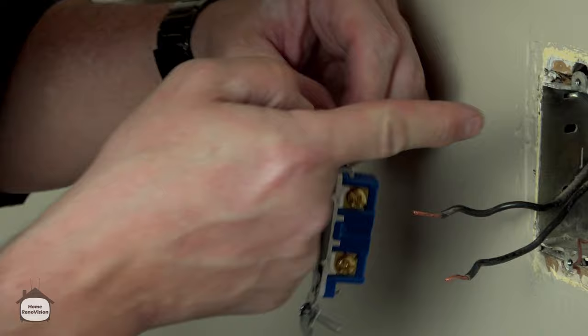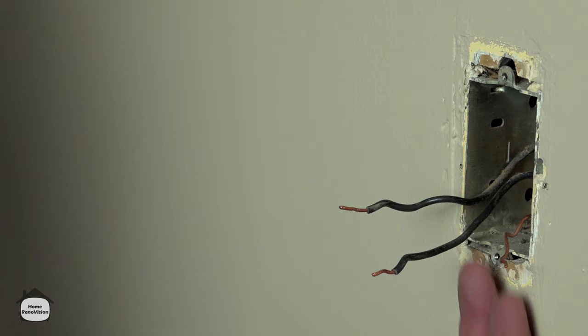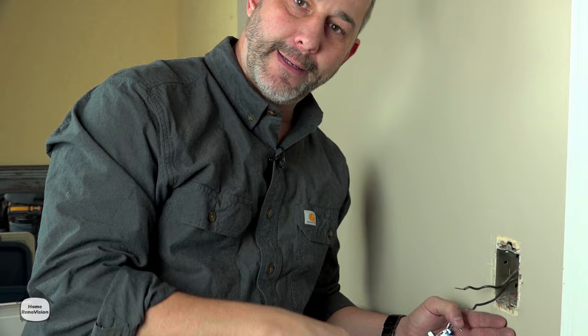Now here's what you're going to know inside the box. There are two white wires and two black wires. So what's going on is we have a white and a black coming from the panel and we have a white and a black traveling to the light.